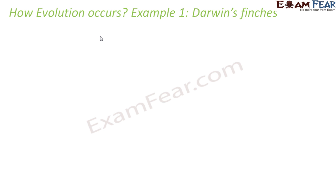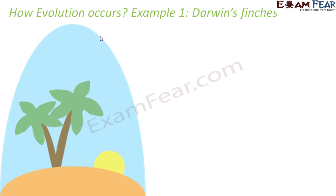While Darwin was doing all these studies on evolution, he went to the Galapagos Islands in the Pacific, where he found a variety of finches — small seed-eating birds. Long, long time back, millions of years ago, a group of finches reached these Galapagos Islands, maybe by some accidental event like a storm. Before that, there were no finches at all.